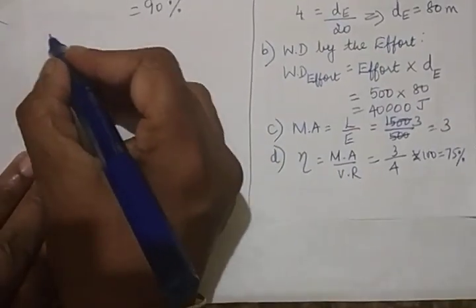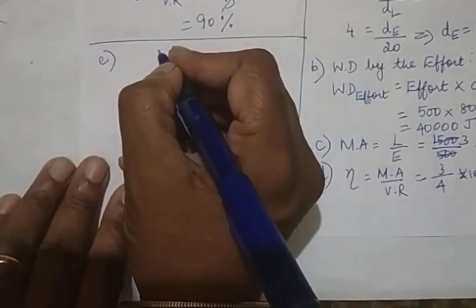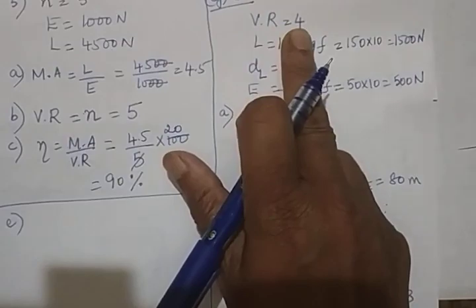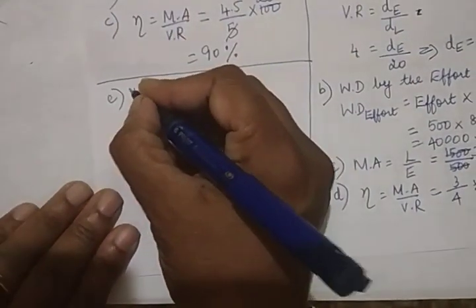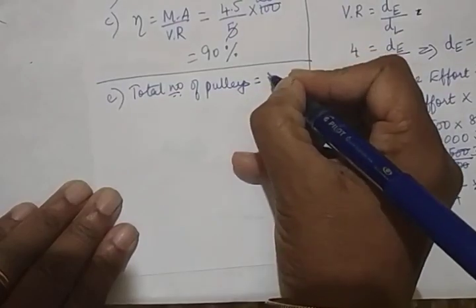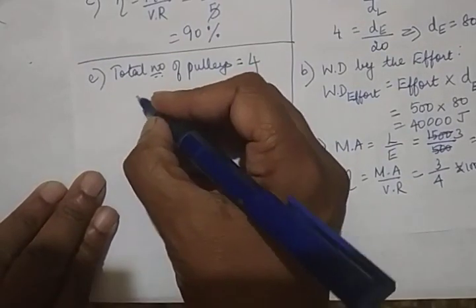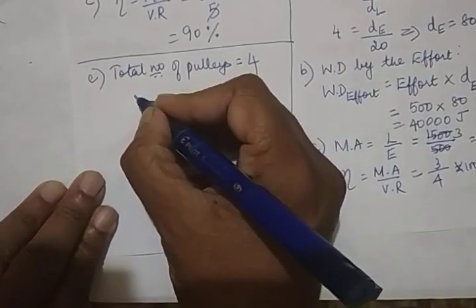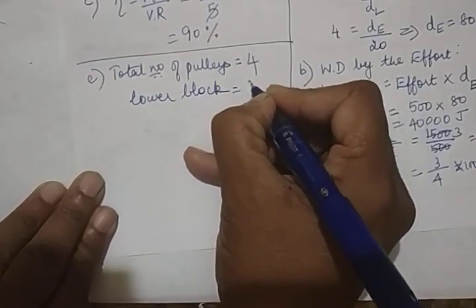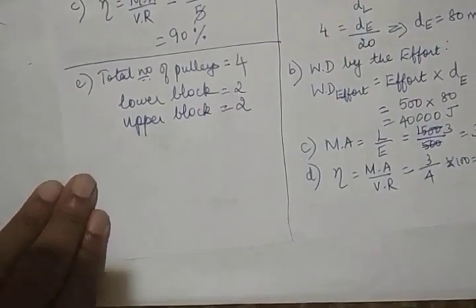Now coming to the E part. They are asking total number of pulleys and the number of pulleys in each block. How will you decide that? Total number of pulleys will be equal to the velocity ratio. Don't equate it to mechanical advantage. So total number of pulleys is equal to 4. Because the velocity ratio is 4. And also they have asked find the number of pulleys in lower block and upper block. So if it is even you know both the blocks will have same number of pulleys. That is lower block will have 2 pulleys and upper block will have 2 pulleys.